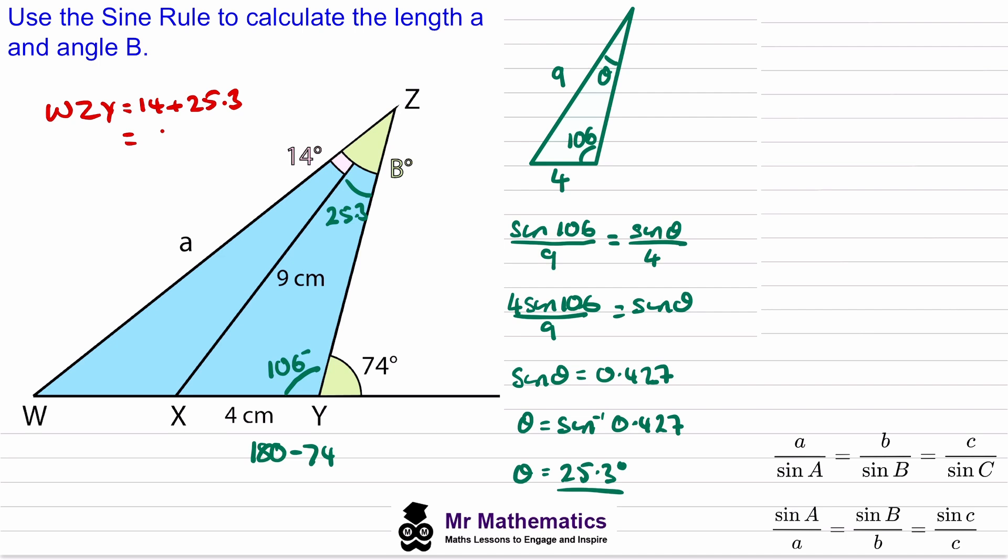Okay so the next part of the question is to work out the length WZ or length A and because we want to work out a length we're going to use this version of the sine rule where the lengths are the numerator but again we need a matching pair of angle and length.